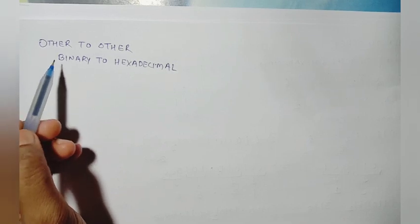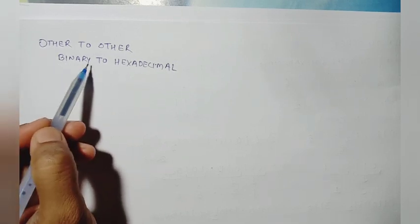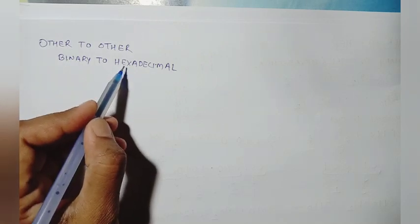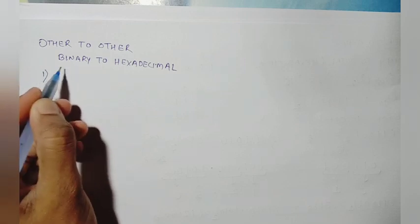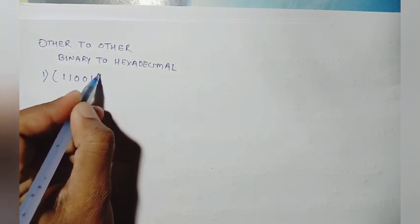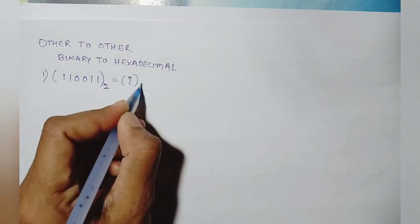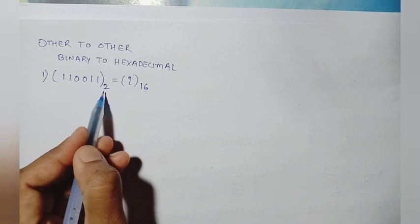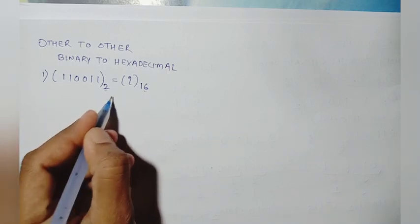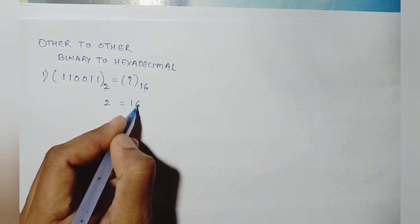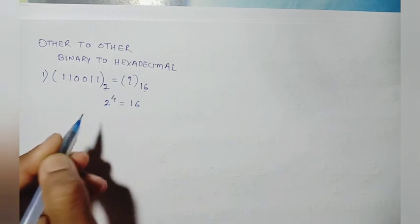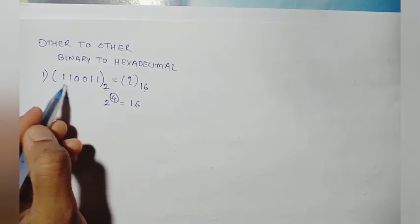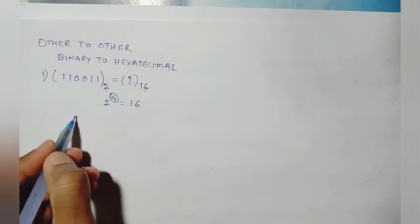Now we will see how to convert a binary number into a hexadecimal number. Just as we did binary to octal, we can easily do binary to hexadecimal. Observe the bases: this is base 2 and this is base 16. Two to the power of 4 is exactly equal to 16. This means we will make groups of 4 bits.